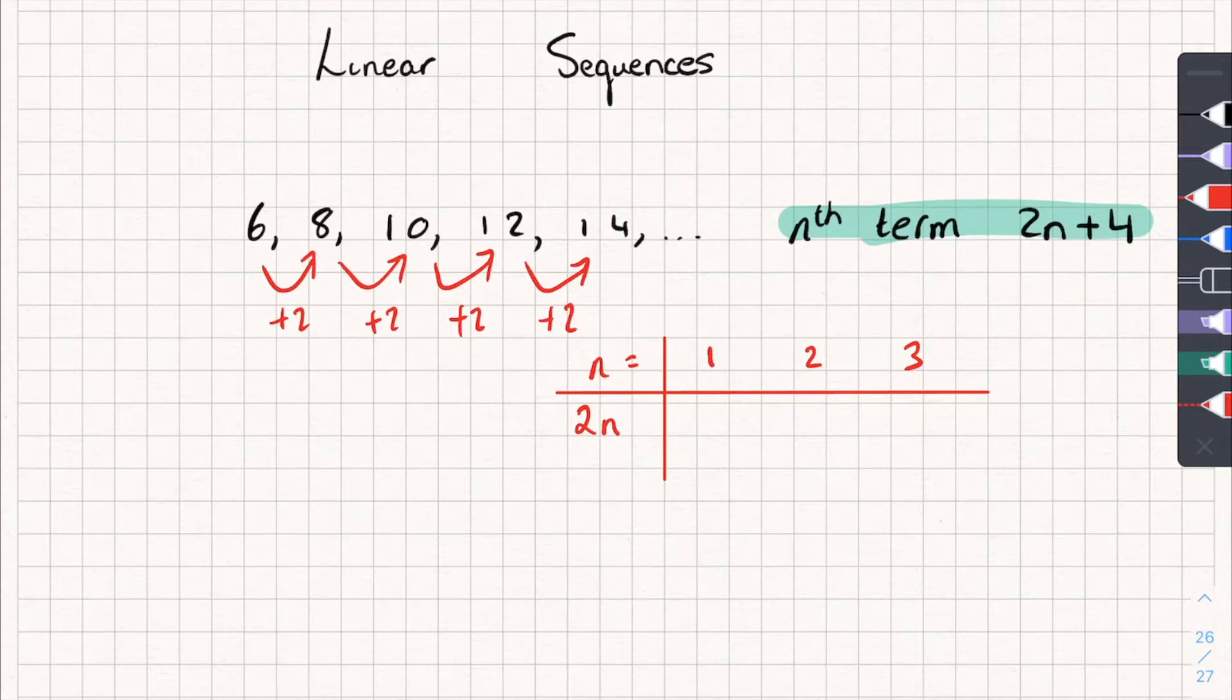When n is equal to 1, my current nth term, which I've got is 2n, spits out 2. Because I'm doing 2 times 1. When n is equal to 2, my nth term will give me 4. And when my n is equal to 3, my nth term is going to give me 6.